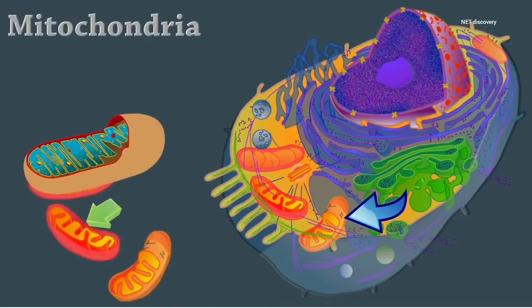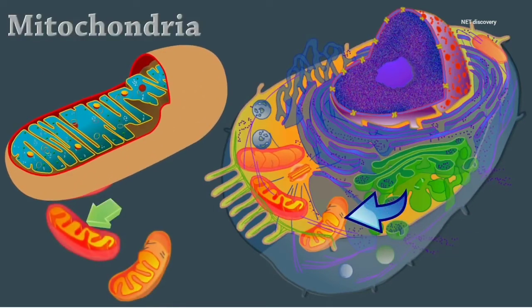Mitochondria are rod-like, double membrane structures. This inner membrane is folded into projections called cristae. This is the site of ATP synthesis and is the powerhouse of the cell.